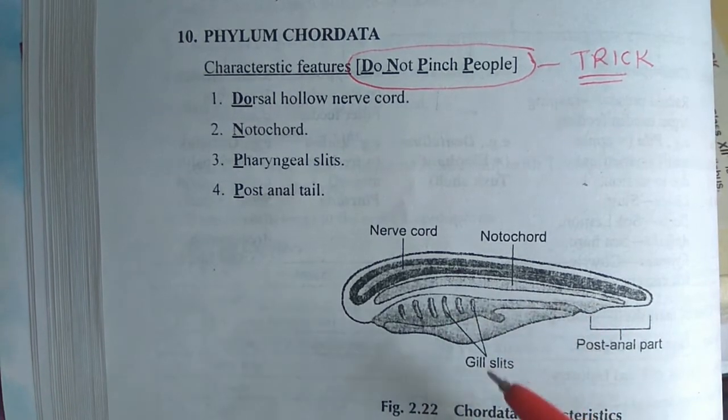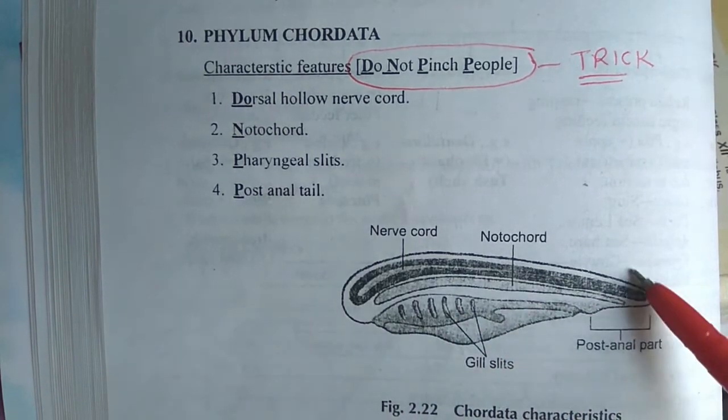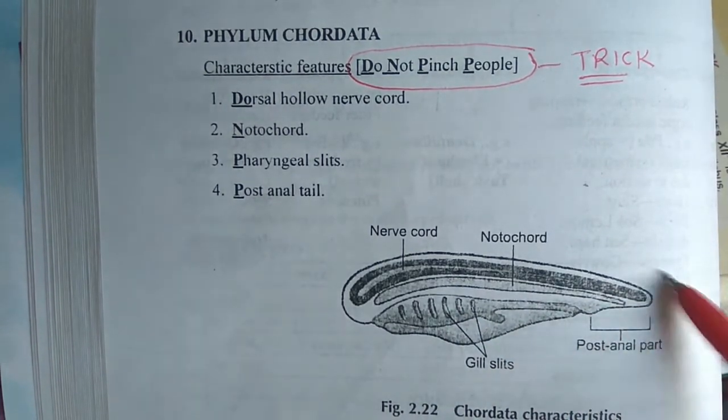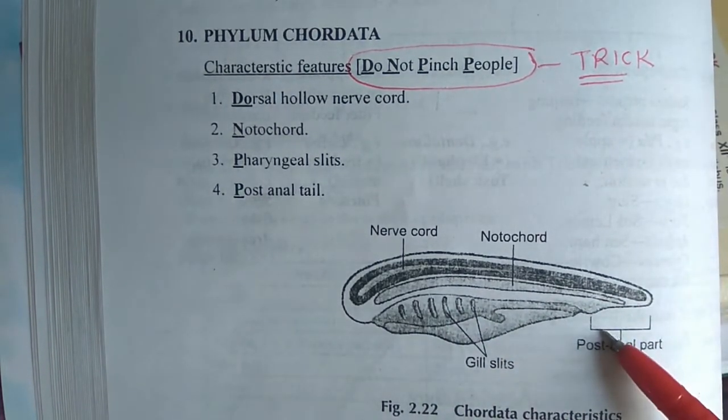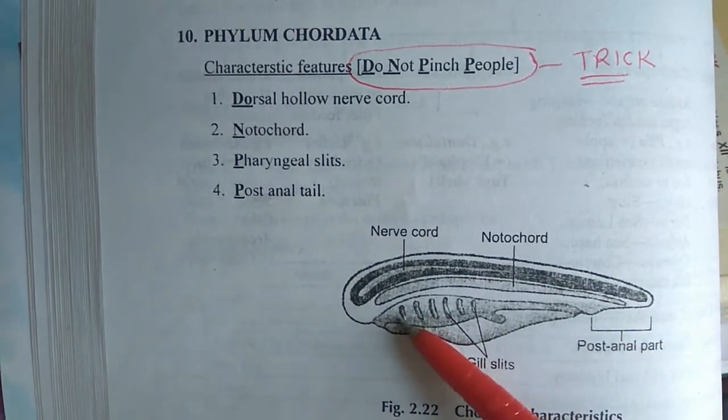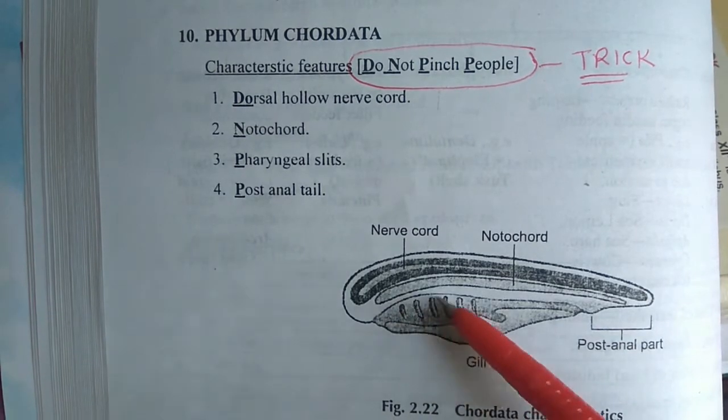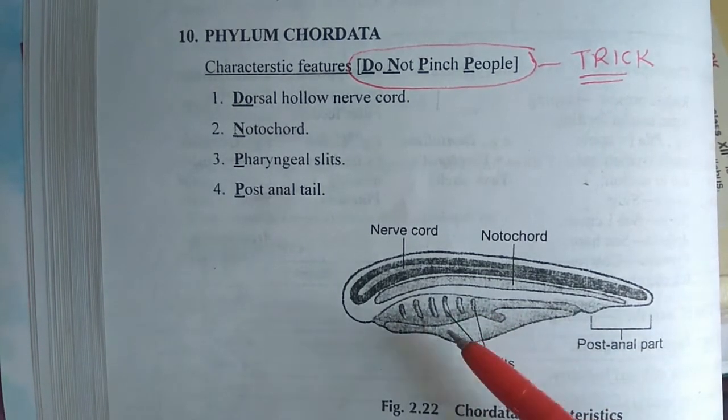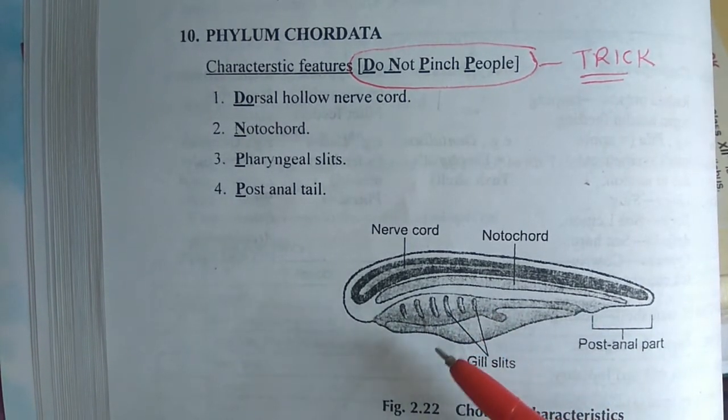This is the post anal tail. And these are the slits — like if you have seen gills, they also have structures like this.